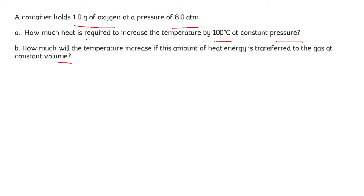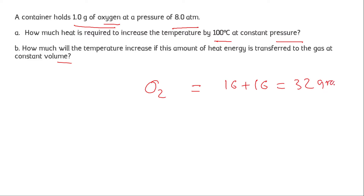In the first condition, pressure is constant and volume is changing. In the second condition, volume is constant and pressure is changing. First, we calculate the number of moles of oxygen gas. Since oxygen gas is O₂, the molar mass is 16 plus 16, which equals 32 grams per mole. The number of moles is 1 divided by 32.